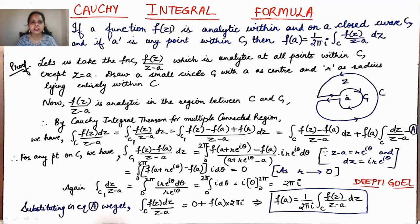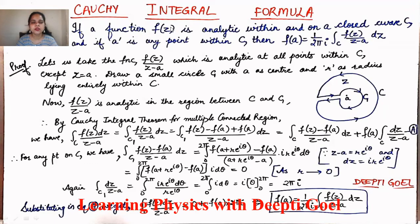Welcome to the new session on complex integration. Here we shall be discussing the Cauchy Integral Formula. We have already discussed in the previous module the Cauchy Integral Theorem, in which the function was analytic inside or on a closed curve C, and the integral over the contour C of f(z) dz was equal to zero, provided that the singularity was lying outside the contour. In the Cauchy Integral Formula, the singularity is lying inside the region bounded by the closed curve C.